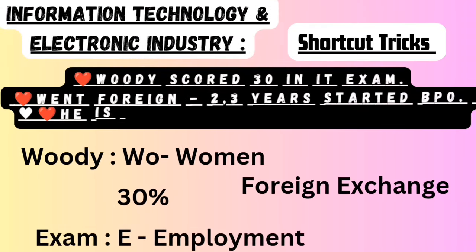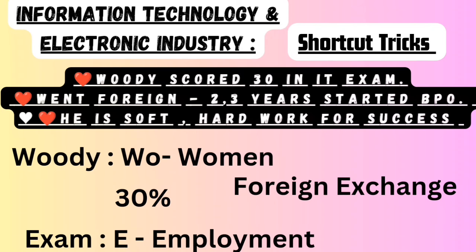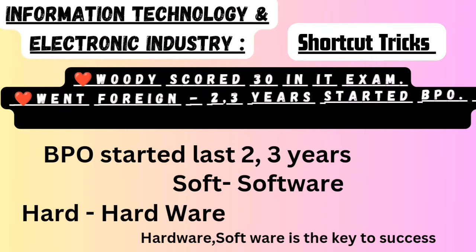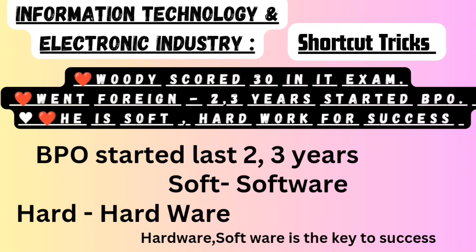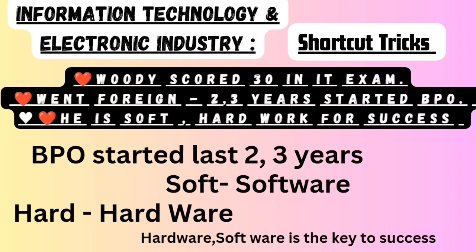Now let's decode the story. 'Udi' — W-O refers to women: 30 percentage of the people employed in this sector are women. 'Exam' — E stands for employment; these industries provide more employment opportunities. 'Went foreign' represents foreign exchange — this sector has been a major foreign exchanger. '2-3 years' and 'started BPO' encode those specific timeframes. 'He is soft and his hard work is the key' means software and hardware is the key to success in this industry.